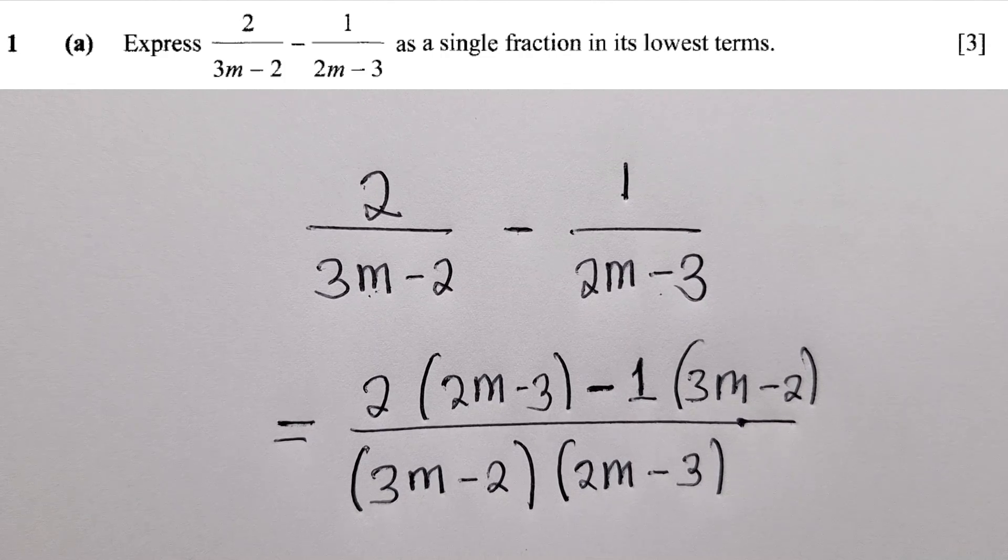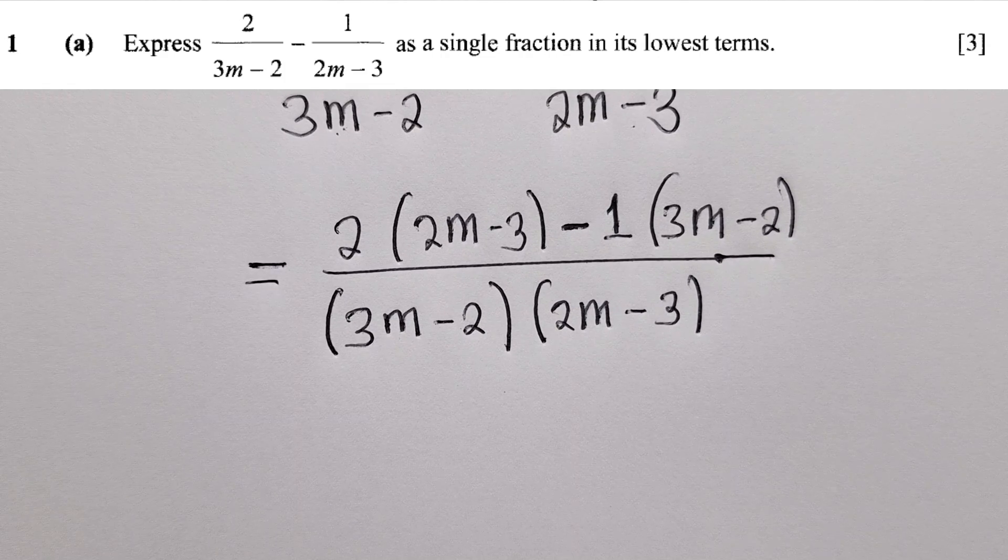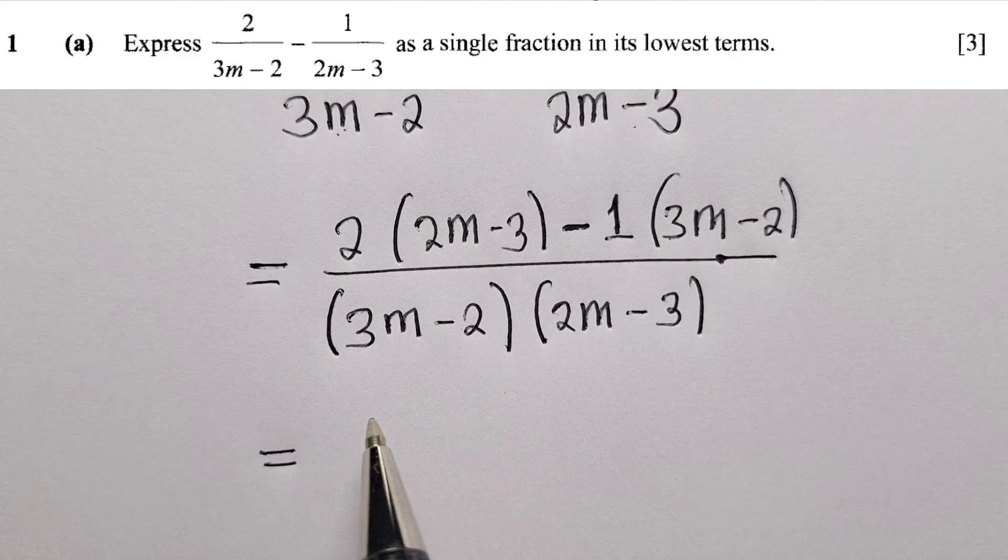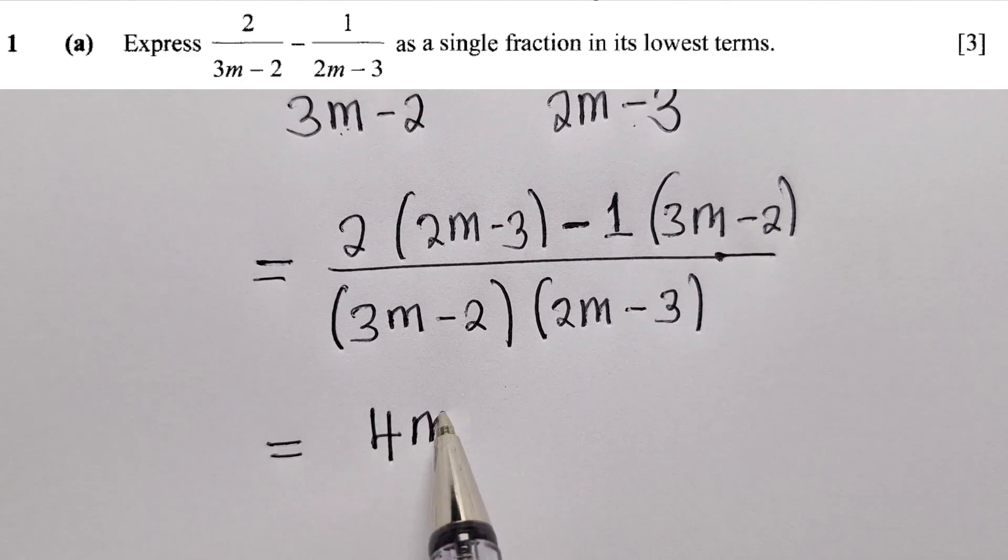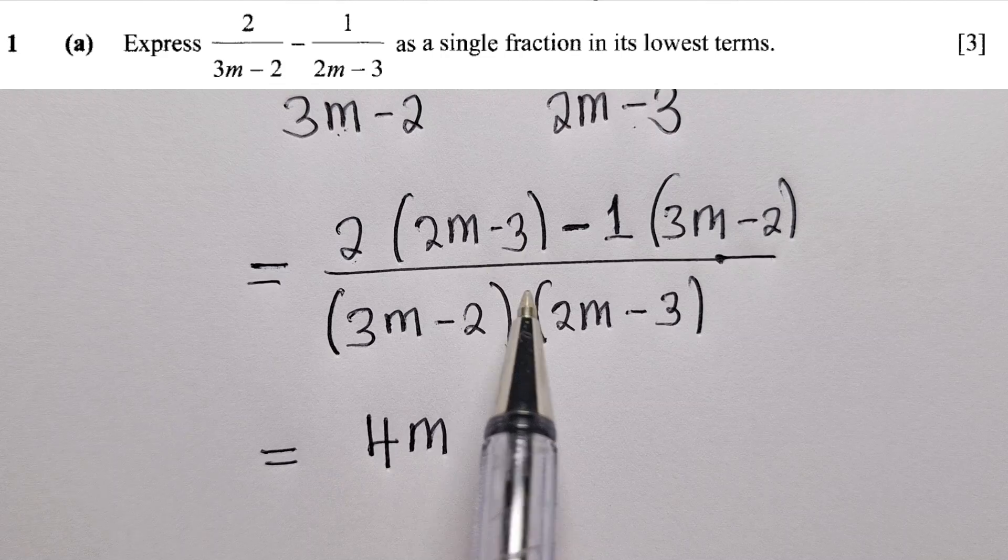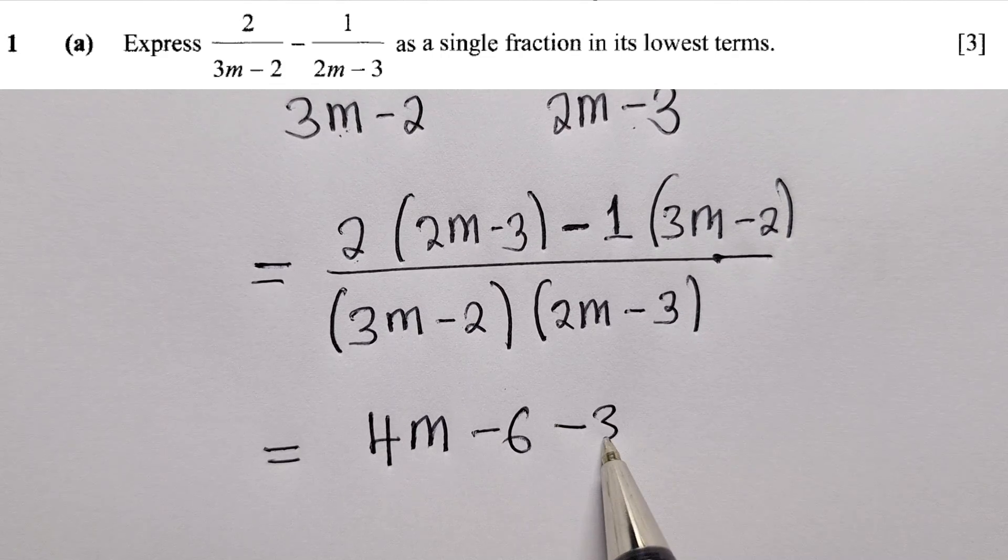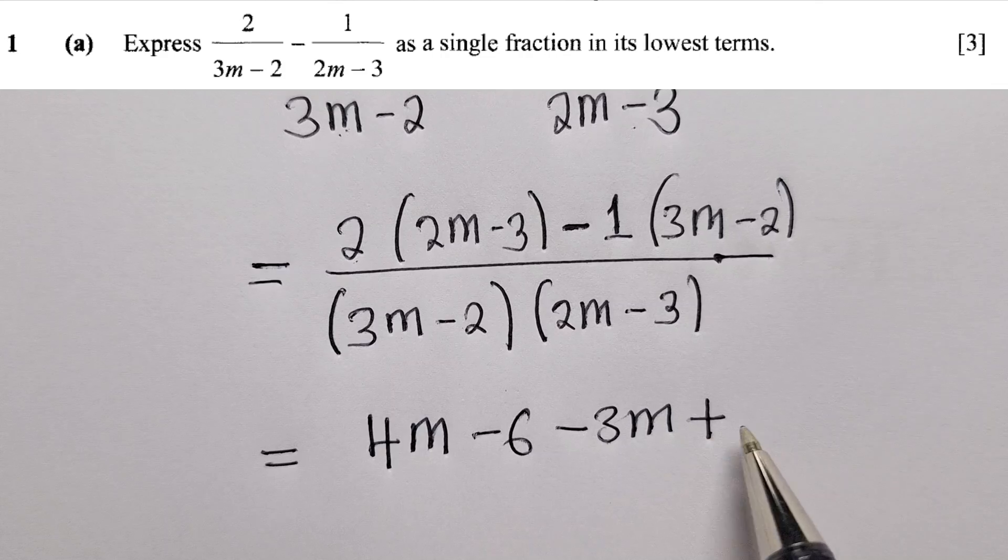Now from this stage, 2 times 2m gives us 4m, 2 times negative 3 is negative 6, then minus 3m plus 2.